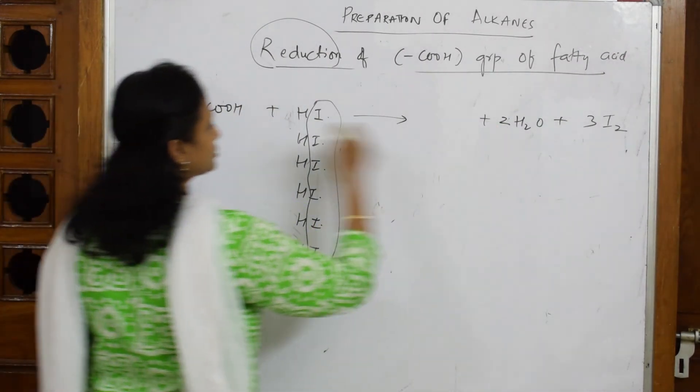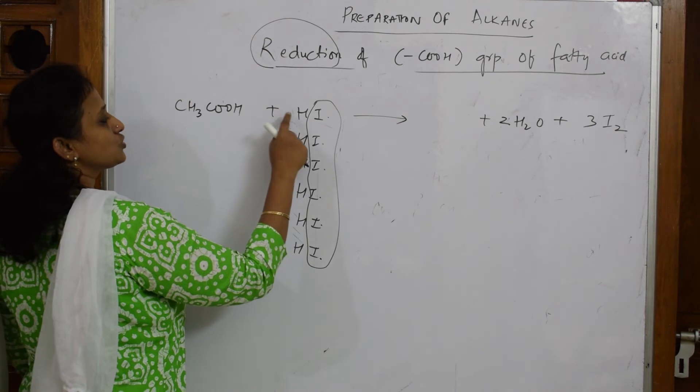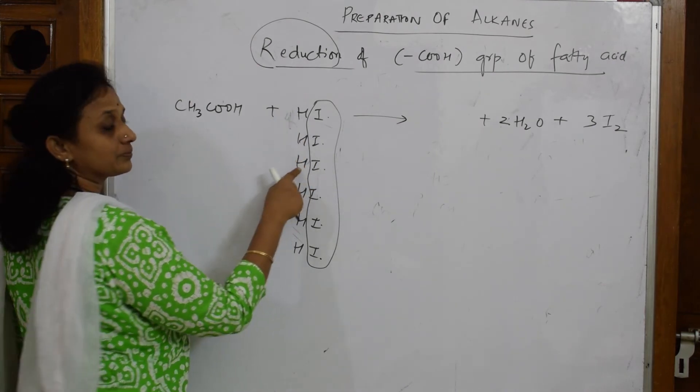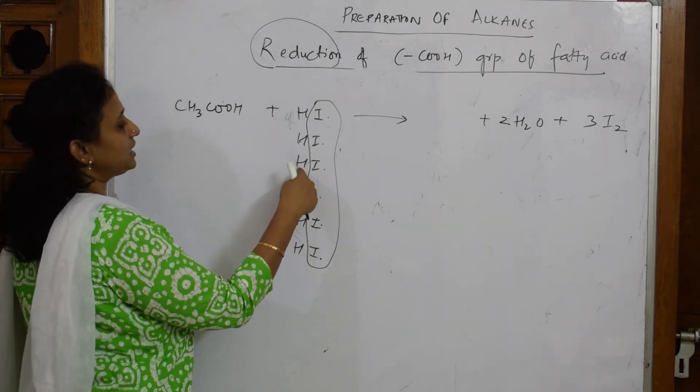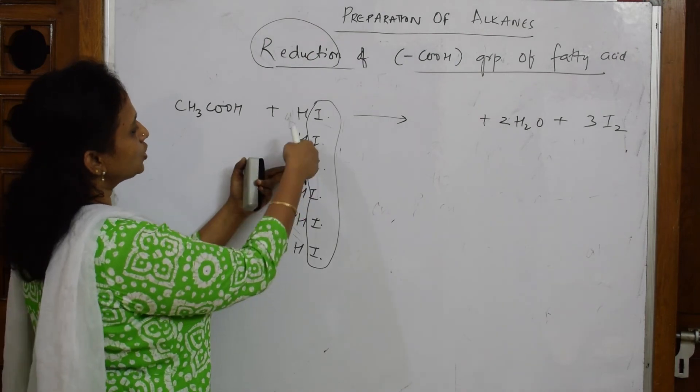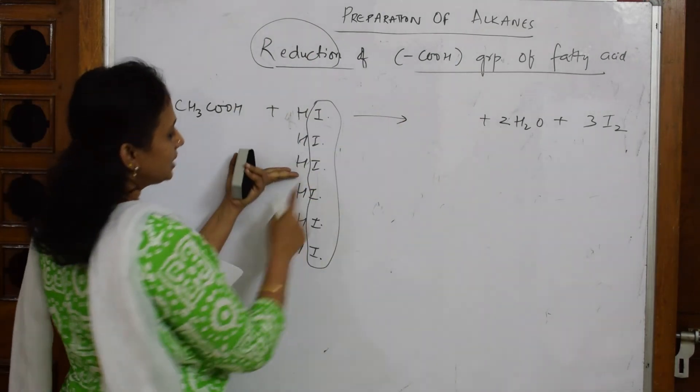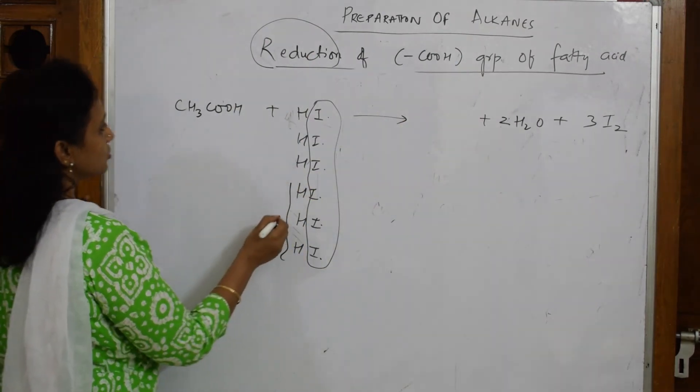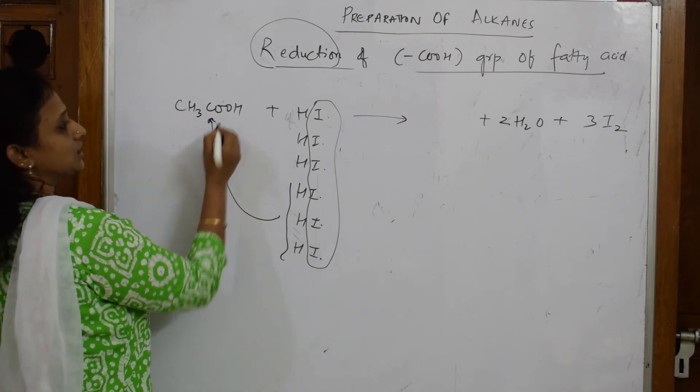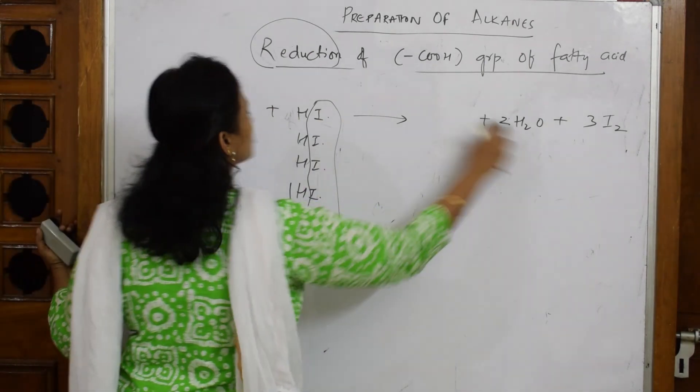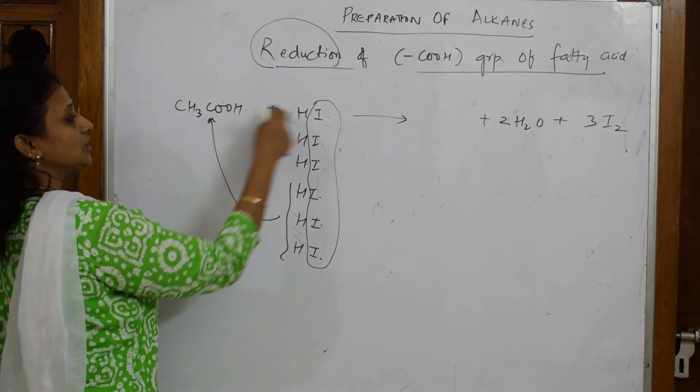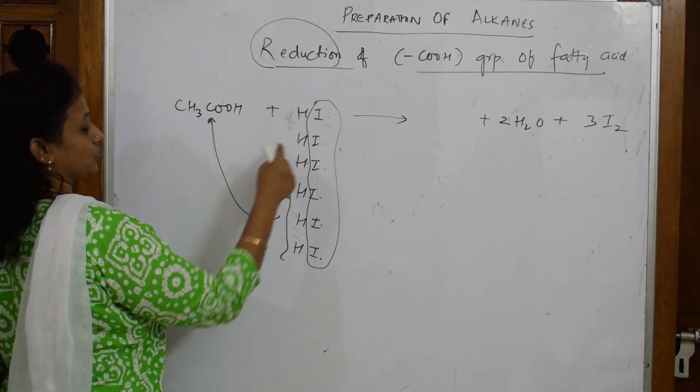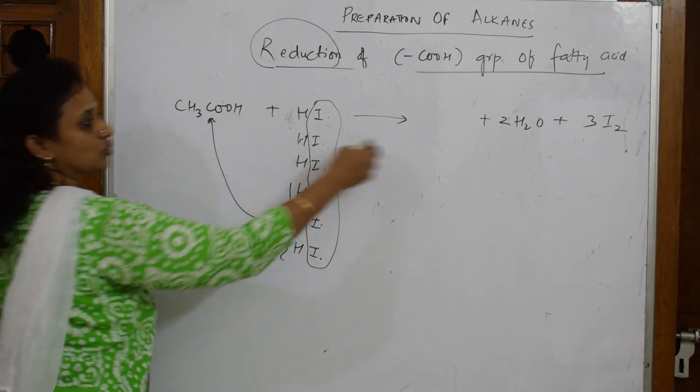Now how many are left? Basically one, two, three, four are over. I'm left with only three. So these three come here. Just see, two oxygens are over with this. Two oxygens, one, two, three, four. Four are over with this.